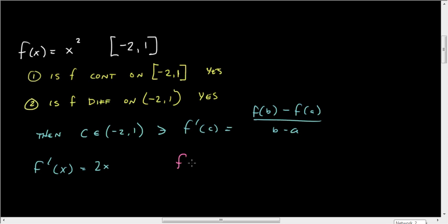So I'm going to figure those out. f(-2) is equal to, let's see, (-2) squared, which is 4. f(1) is equal to 1 squared, which is 1.